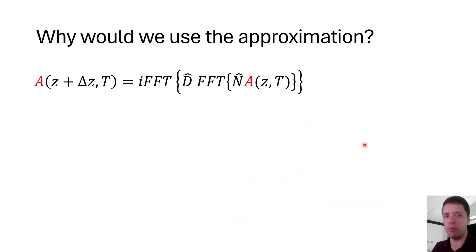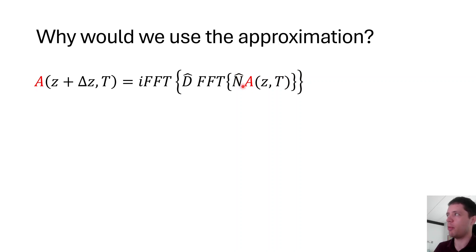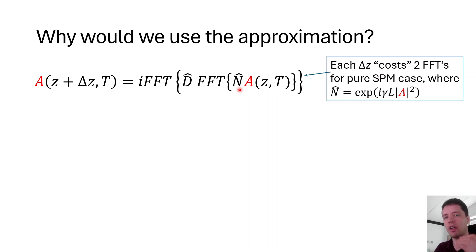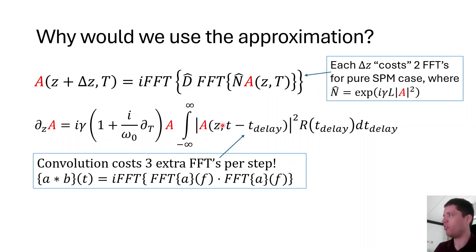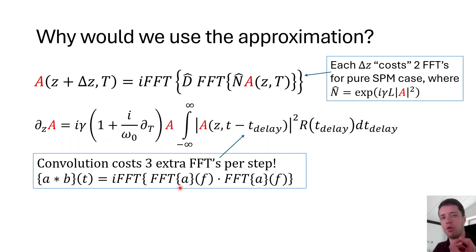Why would we use the approximation when the exact implementation is always exact? It comes down to computational cost. In the split-step Fourier method, a baseline step with only self-phase modulation requires two Fourier transforms. Including the exact Raman convolution adds three more Fourier transforms — because a convolution in the time domain equals multiplying the individual Fourier transforms and then taking the inverse — giving five total. The approximate version, by contrast, only requires computing a gradient, which is far cheaper than three additional Fourier transforms.